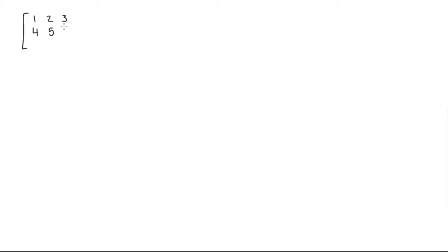Welcome back. In this video we're going to be talking about row echelon form of matrices. So if we have a regular matrix, let's start with a 3x3 one. We can fill in some numbers: 1, 2, 3, 4, 5, 6, and 7, 8, 9. So there we go. This is just a 3x3 matrix that is not in row echelon form.